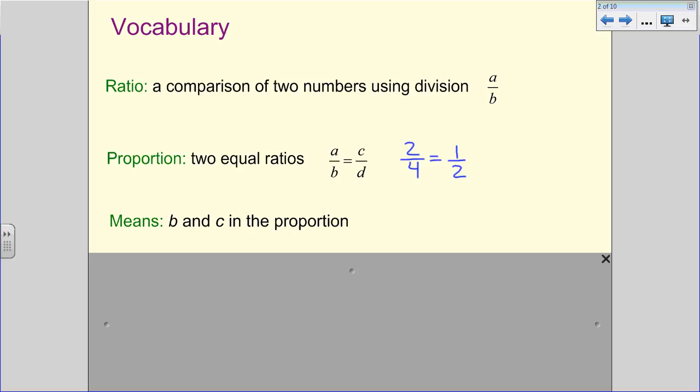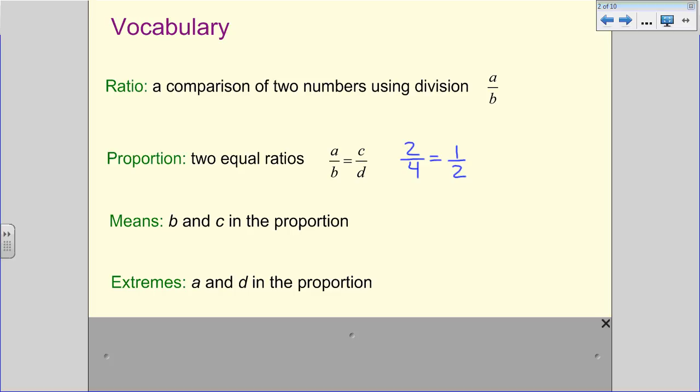We are going to see the words means and extremes a little bit later on in the lesson. The means are B and C in the proportion. The extremes are A and D. Truly, it doesn't matter which one you call the means and extremes. What we're going to do is fall back on how we learn to solve proportions. And that's by cross-multiplying.